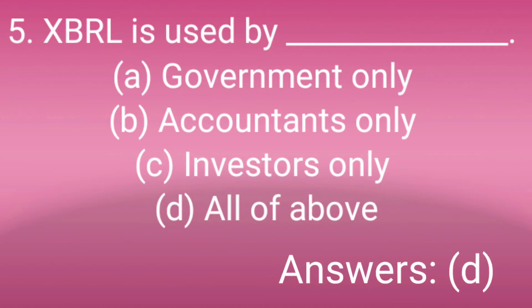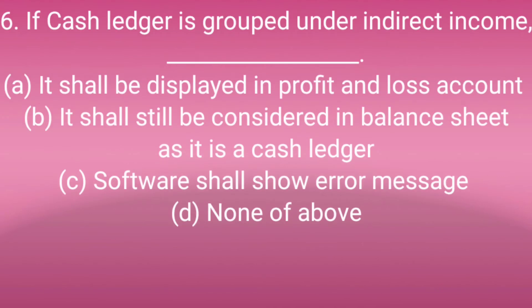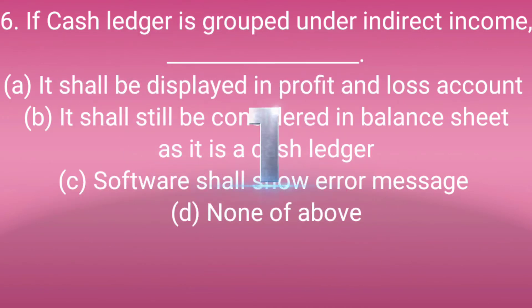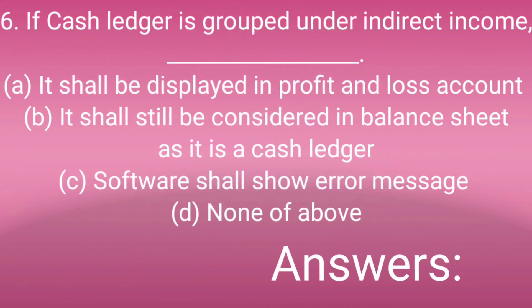Question number six: If a gas laser is grouped under indirect income, what will happen? Option A: It shall be displayed in profit and loss account, Option B: It is still considered in balance sheet as a gas laser, Option C: Software shows an error message, Option D: None of the above. Since B does not show indirect income, we can't treat it as direct income. Answer is A.